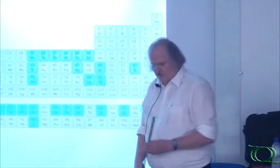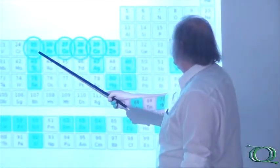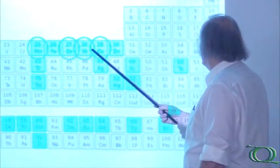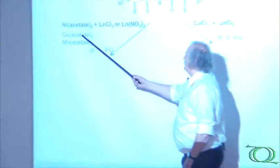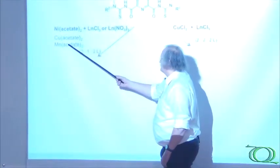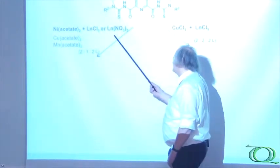And we first decided to go to the lanthanide series and to combine the lanthanide series with some of the 3D transition metals: manganese, cobalt, nickel, copper. The reactions were made in a one-pot way. That means we simply unified nickel acetate or copper acetate or manganese acetate together with lanthanum chlorides or lanthanum nitrates.